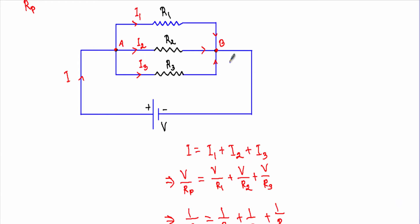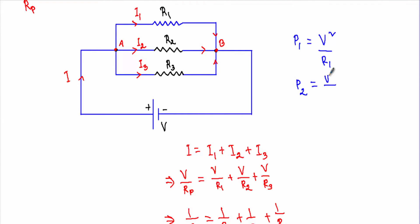Now let me calculate the power drop in this parallel circuit. The voltage difference across the terminals is equal to V. Therefore the power drop across R1 is P1 = V²/R1, the power drop across R2 is P2 = V²/R2, and the power drop across R3 is P3 = V²/R3. The total power drop P = V²/Rp.